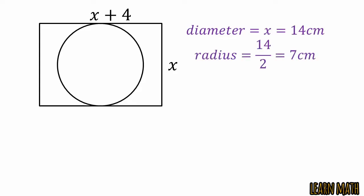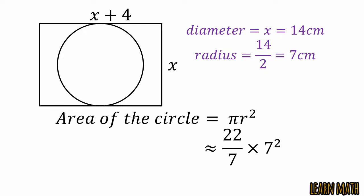As we know that area of the circle is equal to πr² and π is approximately equal to 22/7 and r = 7. Putting values in the formula and simplifying, we can cancel 7 with 7 and we will get 154 cm².